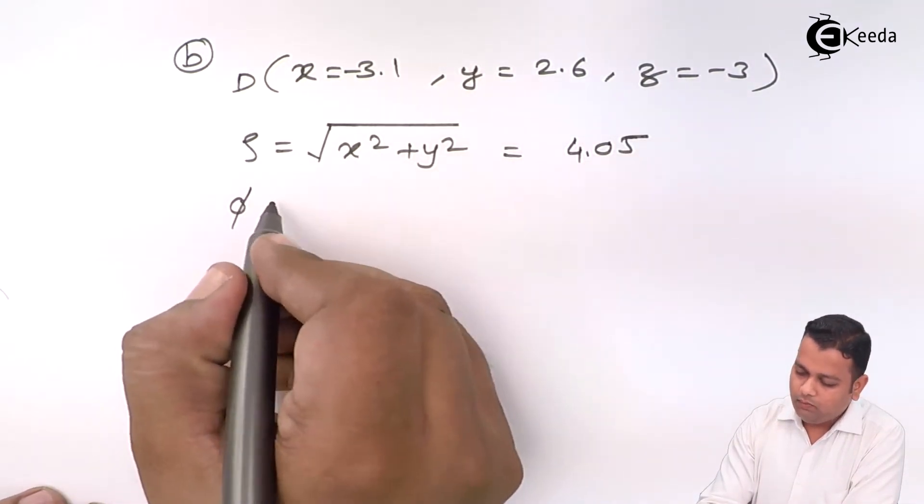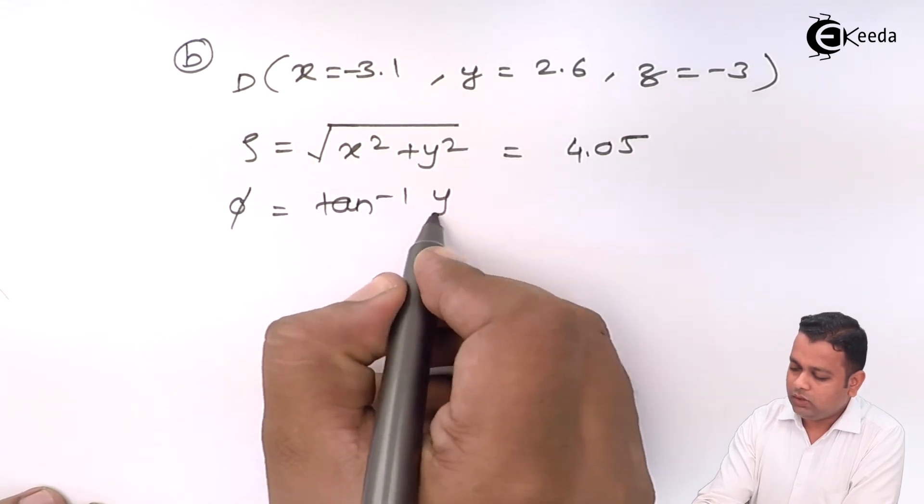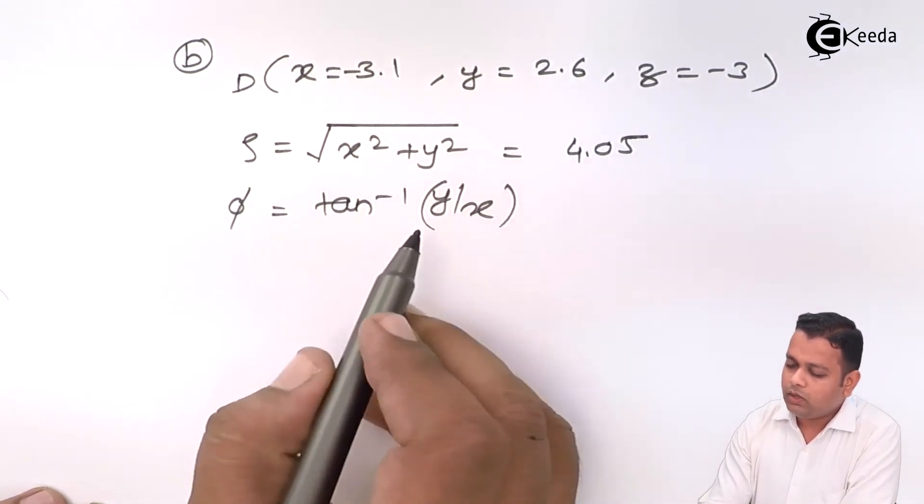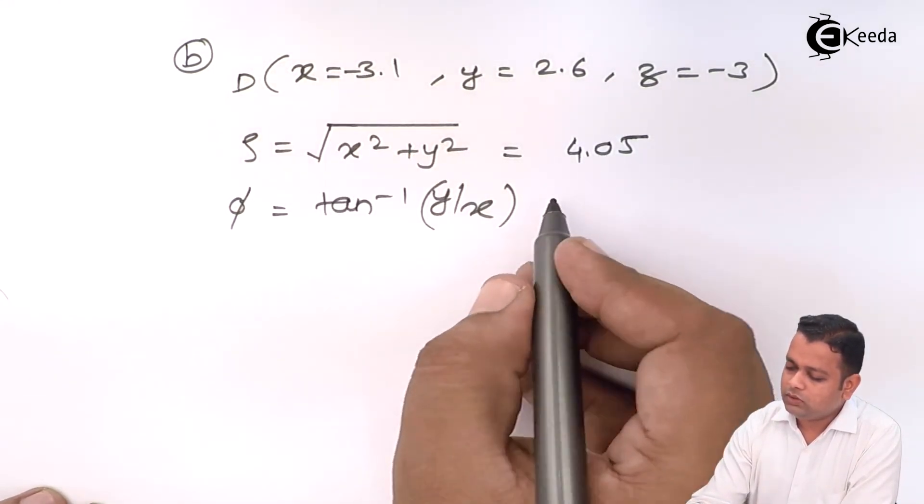Now, phi is equal to tan inverse y by x but here x is negative.